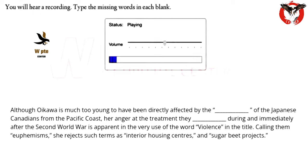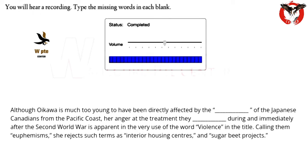Although Oikawa is much too young to have been directly affected by the expulsion of the Japanese Canadians from the Pacific coast, her anger at the treatment they endured during and immediately after the Second World War is apparent in the very use of the word 'violence' in the title. Calling them euphemisms, she rejects such terms as 'interior housing centers' and 'sugar beet projects.'